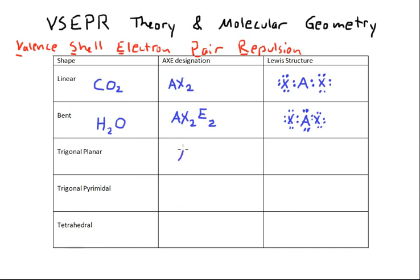Trigonal planar, AX3. Here, the Lewis structure would look like this. I am going to skip putting the non-bonding electron pairs on the peripheral Xs. In the case of chlorides or bromides or fluorides, we would add those in. However, the peripheral Xs could be something like a hydrogen atom as well, so they won't necessarily always have those additional electrons.